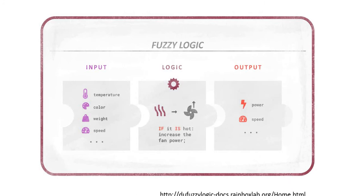In a fuzzy logic system, we have input, logic, and output. For example, if our input is temperature, color, weight, speed, we fit it inside our logic. The reasoning is made by the expert or we replicate the expert decision. If temperature is hot, then increase the fan power. The output is the speed of the fan. This is an example to understand what fuzzy logic is doing.